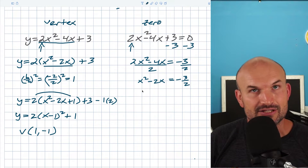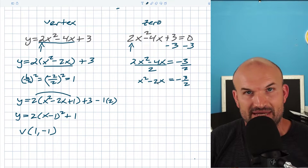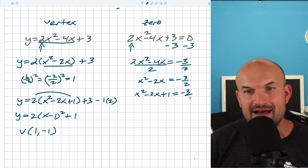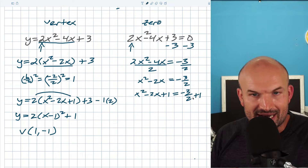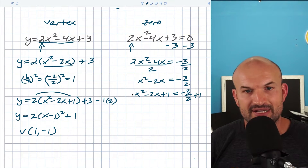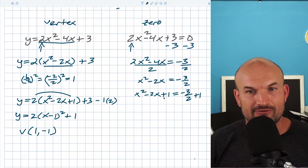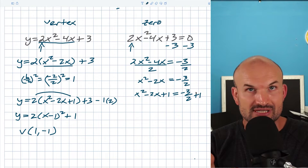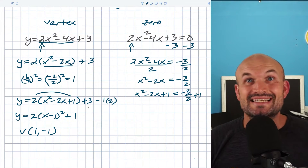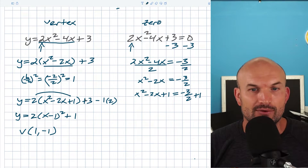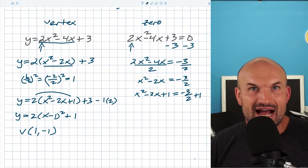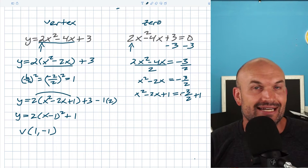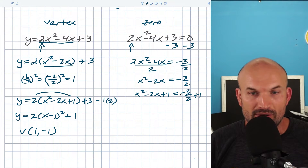Now I've isolated x squared minus 2x on the left-hand side, so I can complete the square. Again, it's b divided by two quantity squared — so I add one to both sides: x squared minus 2x plus one equals negative three halves plus one. The nice thing here is I don't need to multiply by two because that two was already divided out. So I can simply add one to both sides. An important distinction: in this method I'm adding on both sides, whereas in the previous method I was adding and subtracting on the same side. Make sure you understand which approach you're using to keep your equation balanced.